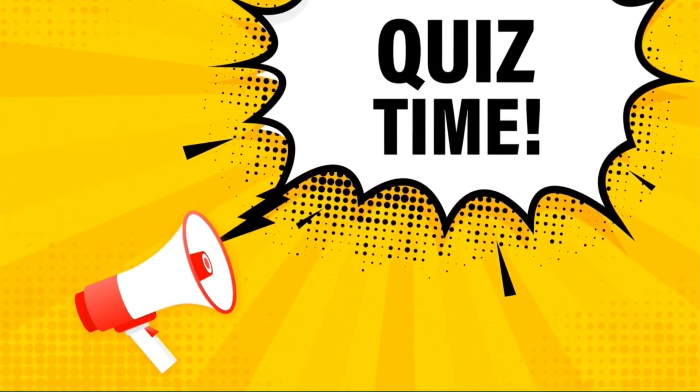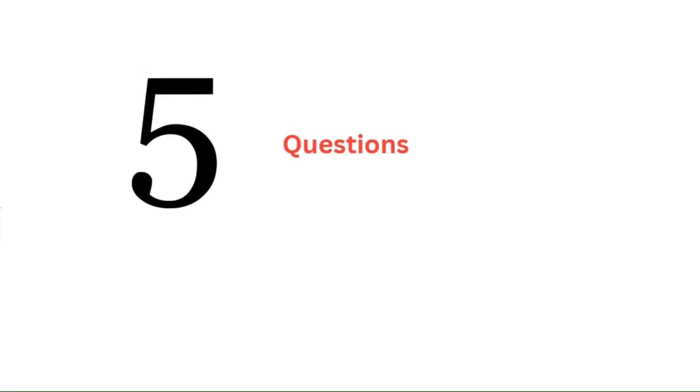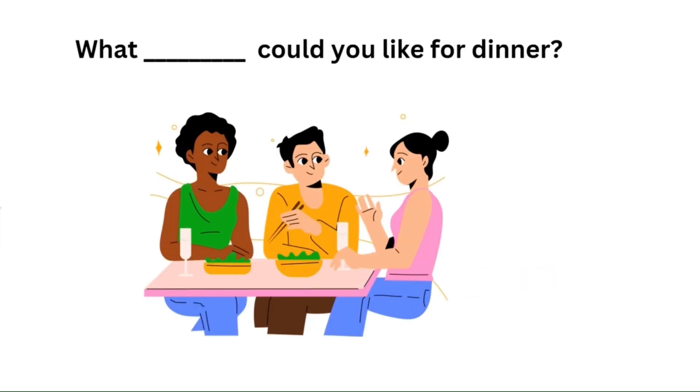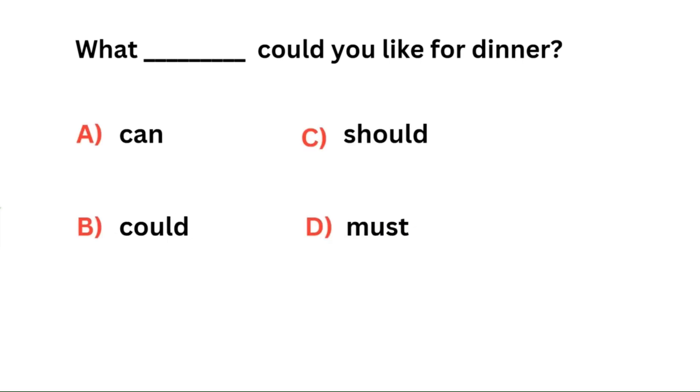It's quiz time. There will be five questions and each question will be provided with four options and you have to answer it in five seconds. Let's begin. First one: What ___ could you like for dinner? The options are: can, could, should, must.